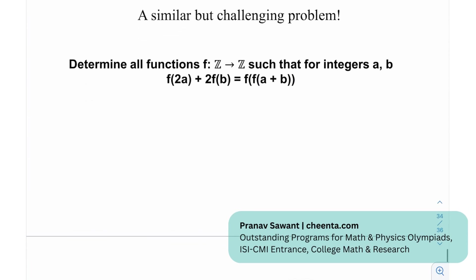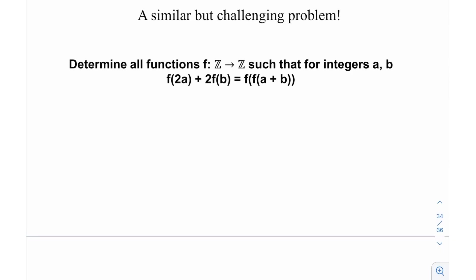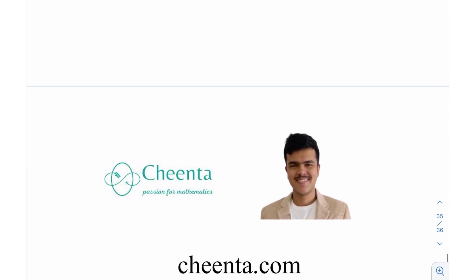Here's a similar challenging problem: determine all functions f defined from integers to integers such that for integers a, b, this functional equation is satisfied. This is also an IMO problem — from IMO 2019, I believe it was problem number 1 or problem number 4. It's again solvable using elementary substitutions and building upon that. Give it a go, and if you're able to solve it, let me know. Until then, I'll see you in the next video. Thank you very much and bye-bye.